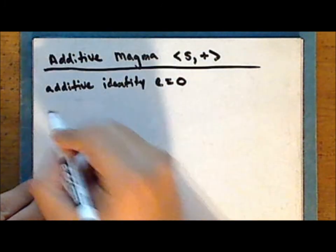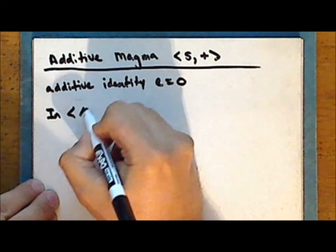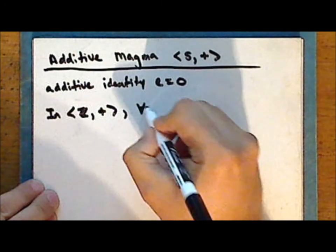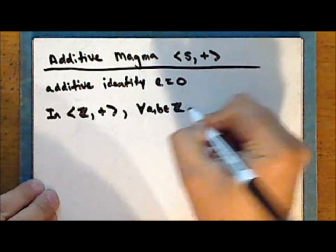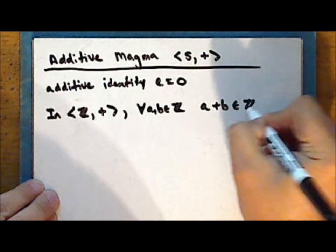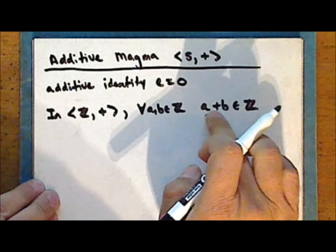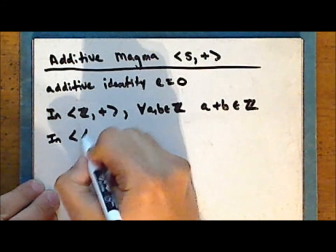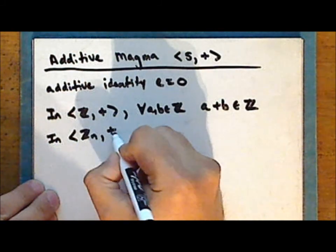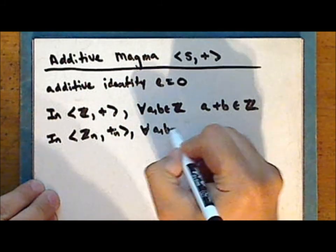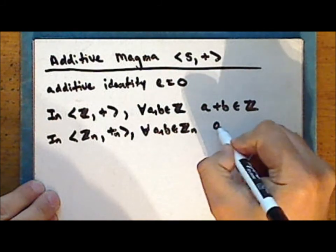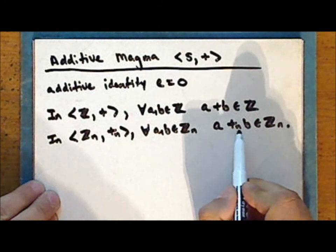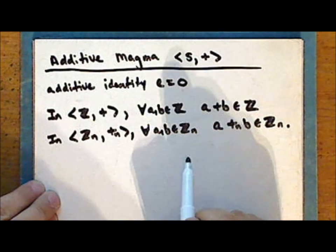Another convention with an additive magma is that the operation is explicitly shown. So for example, in the magma consisting of the integers under normal addition, for every pair of integers we know that their sum is also an integer, and we explicitly show the operation of addition between the two elements. As another example, in the set of integers modulo n under addition modulo n, we know that for each pair of integers modulo n their sum modulo n is also an integer modulo n, and we show the operation explicitly between the two elements a and b.